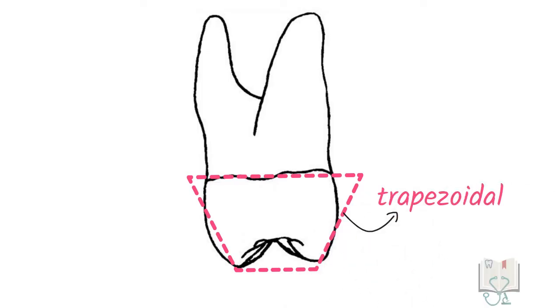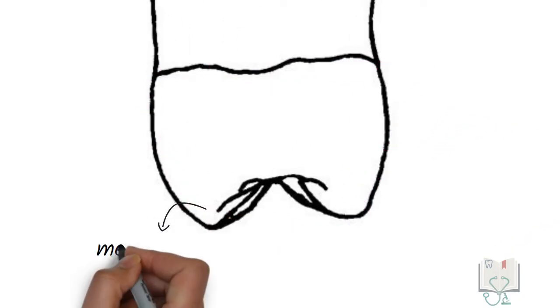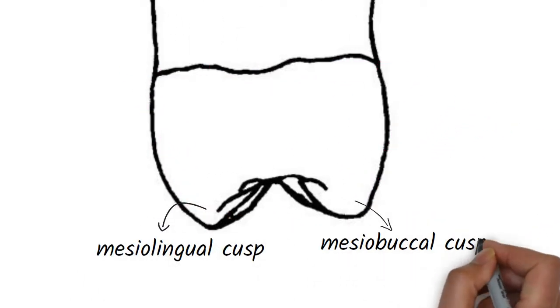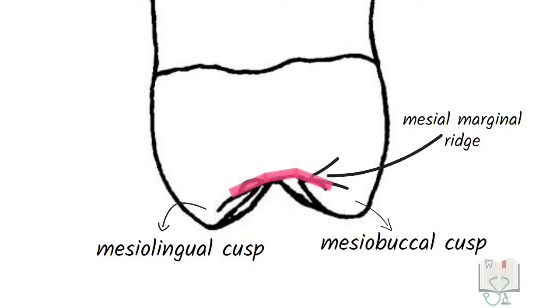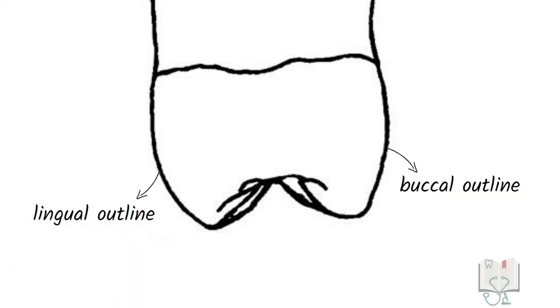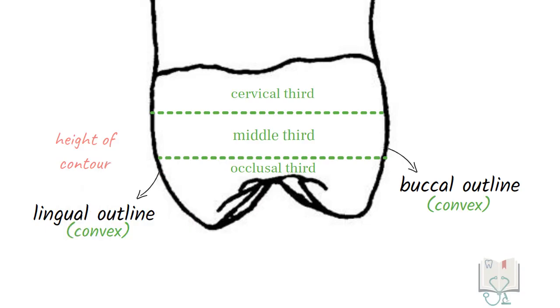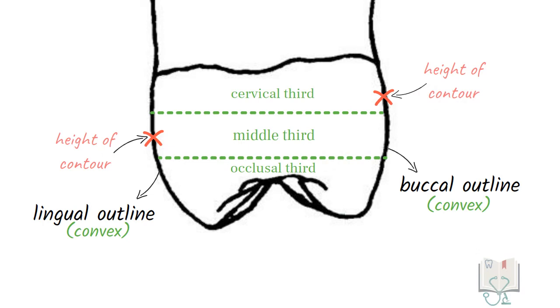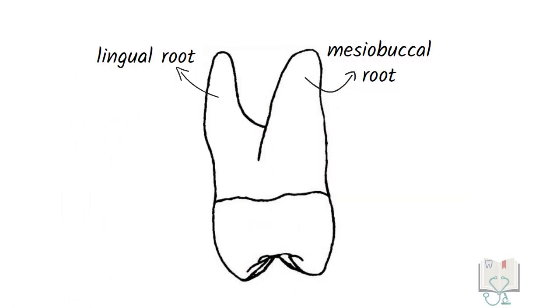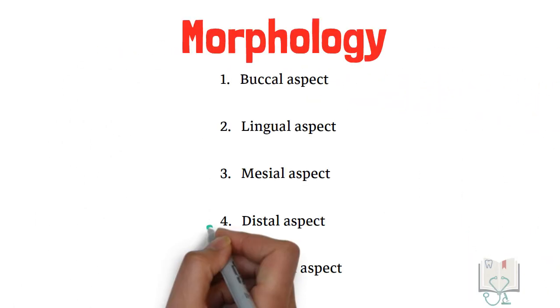Next, the mesial aspect. The outline form of the crown is trapezoidal in shape with the longer side towards the cervix and shorter side towards the cusps. Both mesial cusps — mesiolingual and mesiobuccal — are visible. The mesial marginal ridge is seen running horizontally between the two cusps. Both buccal and lingual outlines are convex. The height of contour of the lingual outline is in the middle third and that of the buccal outline is in the cervical third because of the cervical ridge. Only two roots are visible from the mesial aspect: the lingual root and the mesiobuccal root.